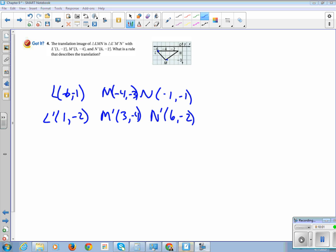This is a 6. It's bad when you can't even read your own writing. So to go from negative 6 to positive 1, that's an addition of 7. Let's see if we add all of our x-coordinates, if they're all an addition of 7. So negative 4 to 3, that is an addition of 7. Negative 1 to 6, that is also an addition of 7. So the translation is, we're going to add 7 to the x-coordinate.